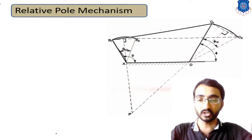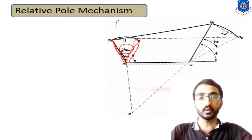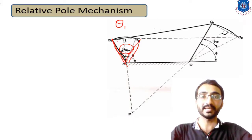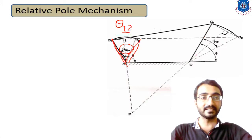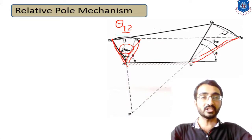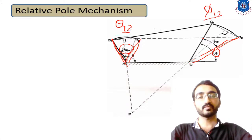Considering the figure properly: the initial position is A-B1, and the notation for movement from first to second position is theta-12. So when the input link rotates from its first to second position, the angle between these positions is termed theta-12. Due to this theta-12 input, the output link C1-D rotates to its C2-D position. The output angle phi moves from its first position to second position, denoted as phi-12.